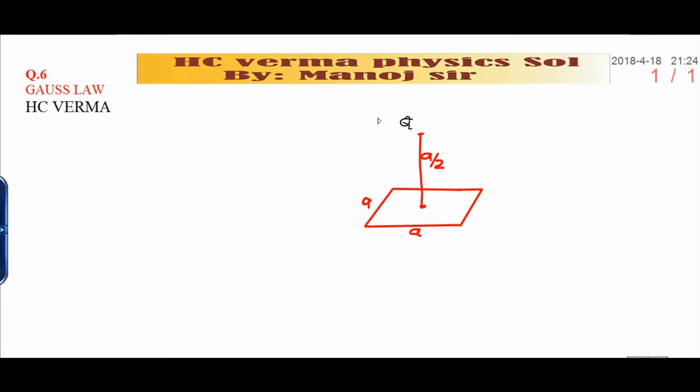Gaussian surface can be drawn in any way, but it should be almost symmetrical. I am taking this distance as A by 2, this edge is A. If this particular distance is A by 2, it means this positive Q charge lies at the center of the cube. That is why I have to draw a cube over here in order to get Gaussian surface.